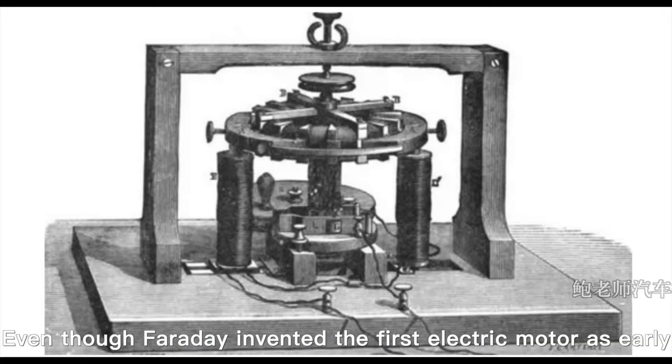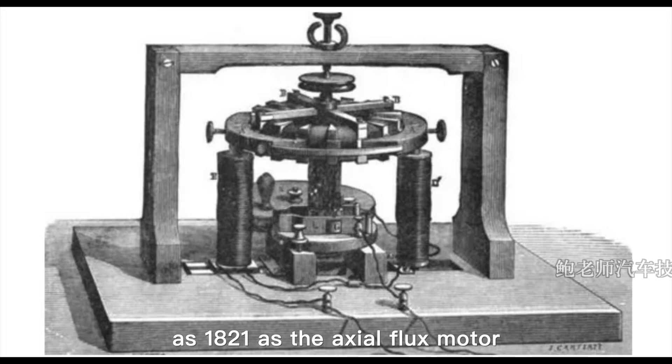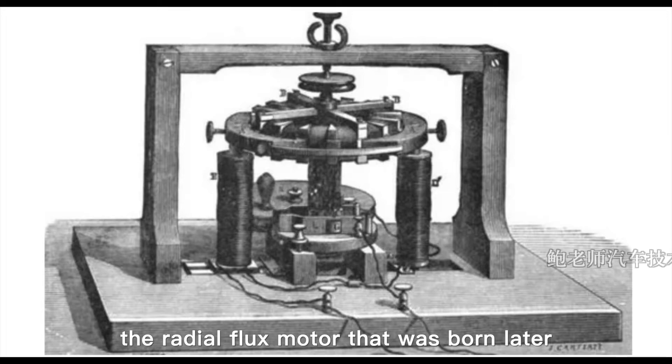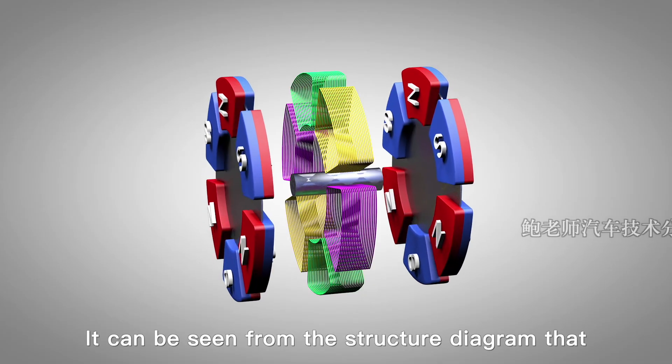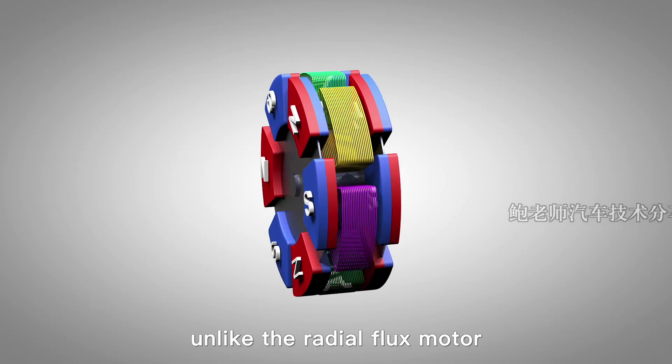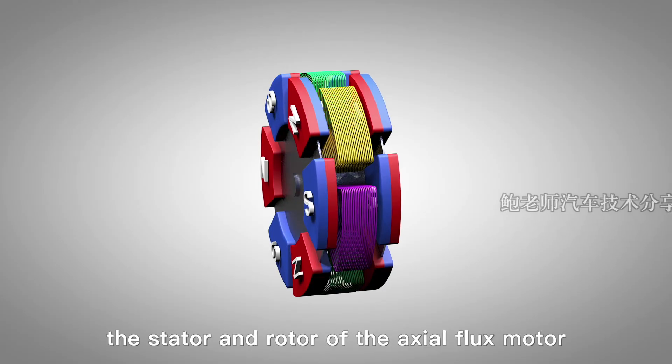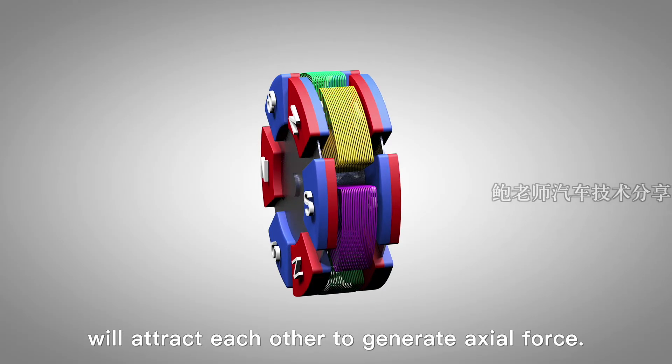Even though Faraday invented the first electric motor as early as 1821 as the axial flux motor, the radial flux motor that was born later has been more fully developed. It can be seen from the structure diagram that, unlike the radial flux motor, the stator and rotor of the axial flux motor will attract each other to generate axial force.